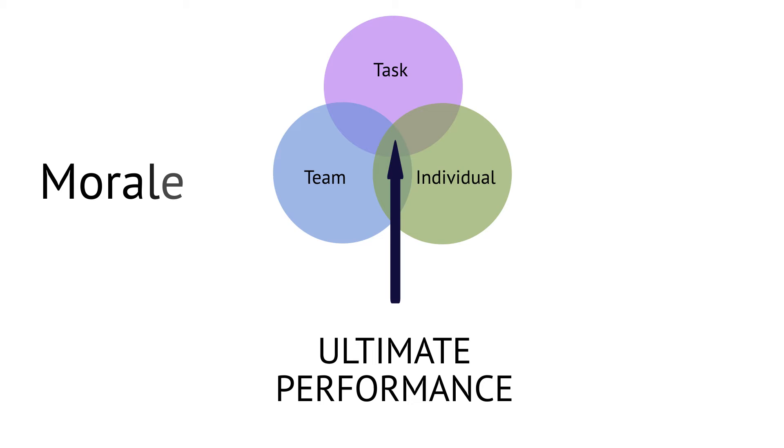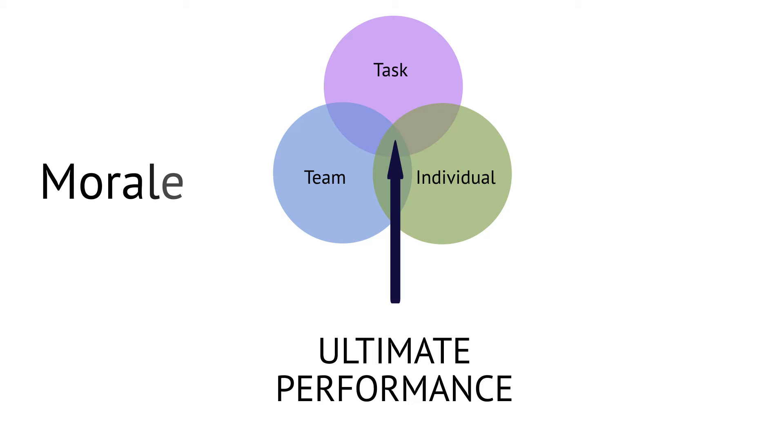The effective leader keeps all three elements in balance to build morale, improve quality, and get results. It's vital not to get bogged down in one area and neglect the others.